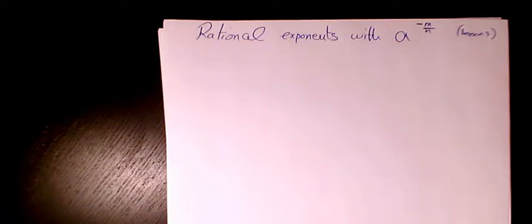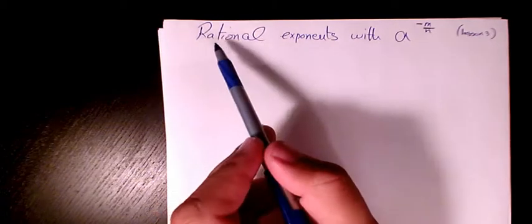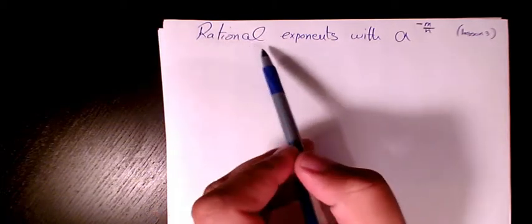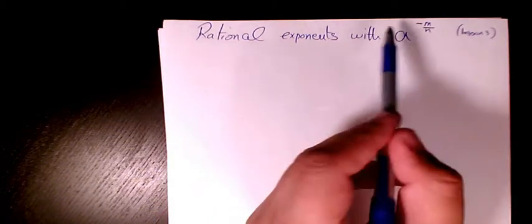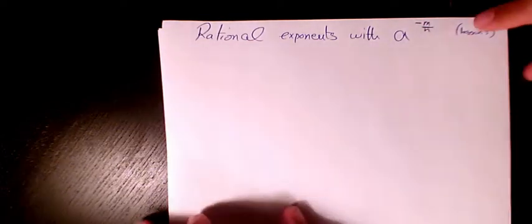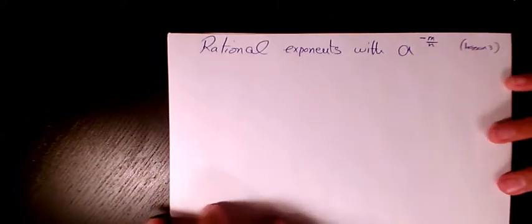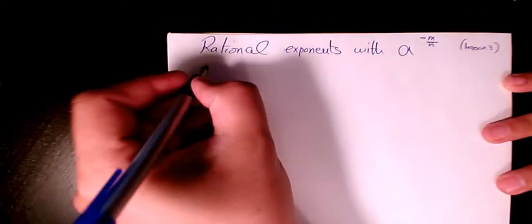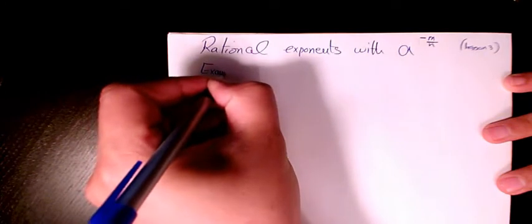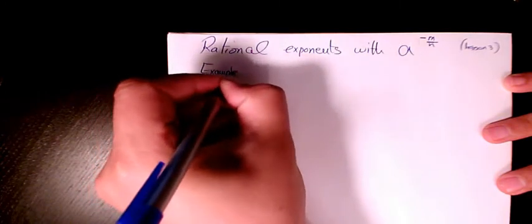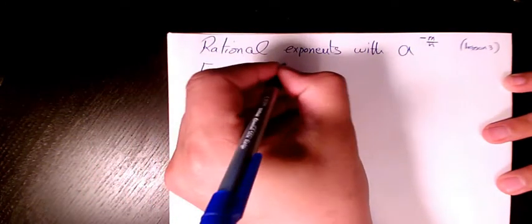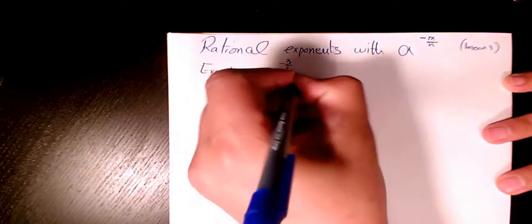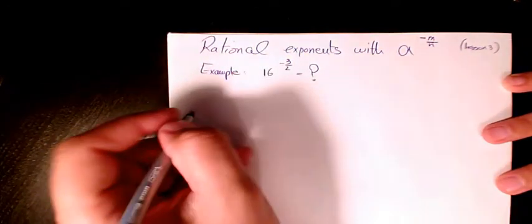Welcome to my channel. In this video I want to continue talking about rational exponents with a to the power of m over n, but this time we have negative exponents. Let me show you a couple of examples. The first example is 16 to the power of negative 3 over 2.